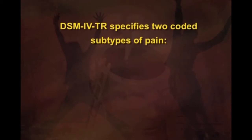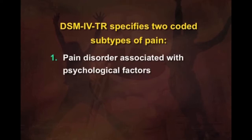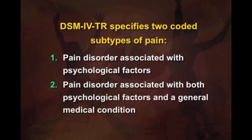DSM-IV-TR specifies two coded subtypes of pain. The first is pain disorder associated with psychological factors, and the second is pain disorder associated with both psychological factors and a general medical condition. The first subtype applies where psychological factors are judged to play a major role in the onset and maintenance of the pain — that is, where any coexisting medical condition is considered to be of minimal causal significance.